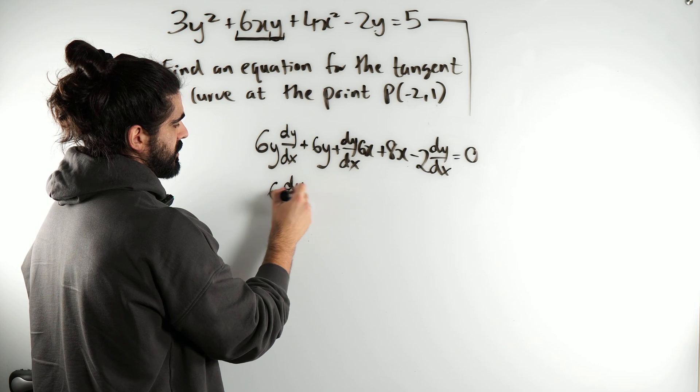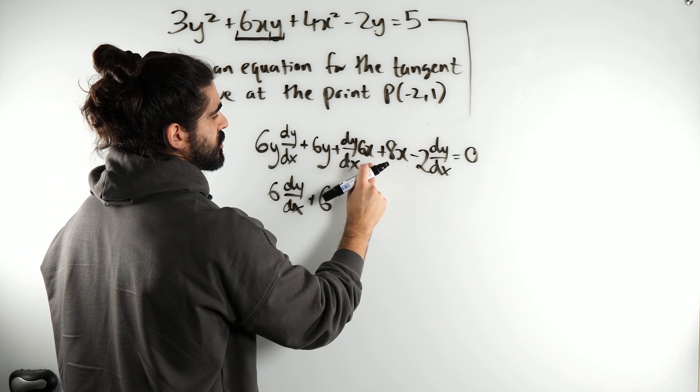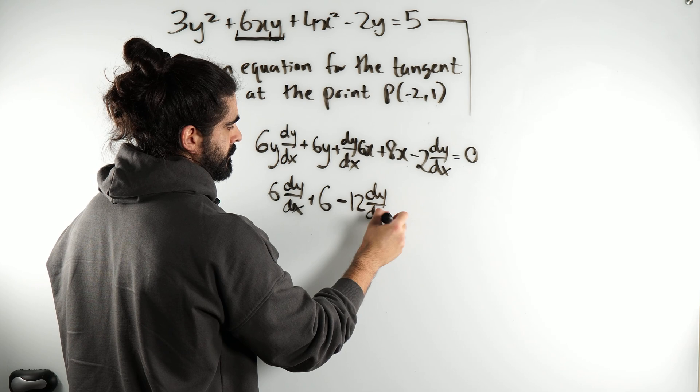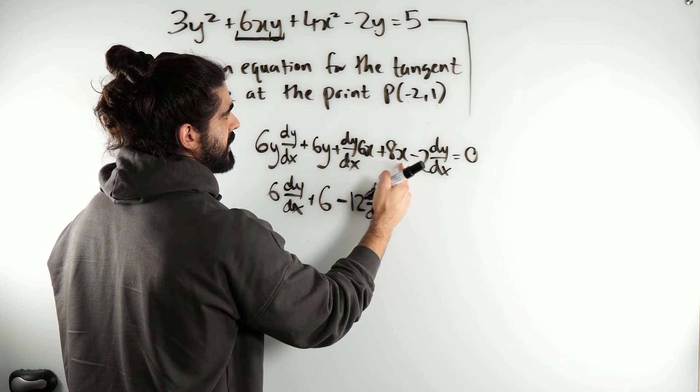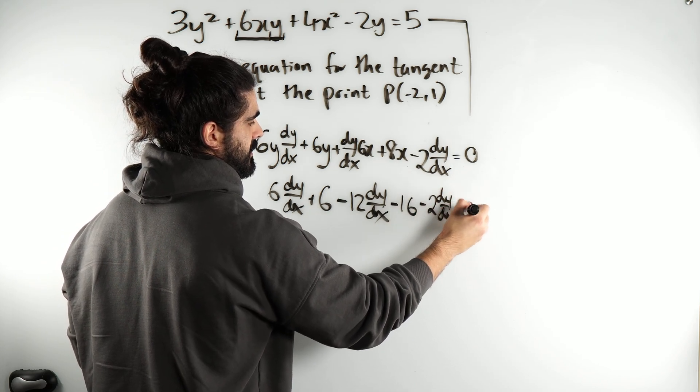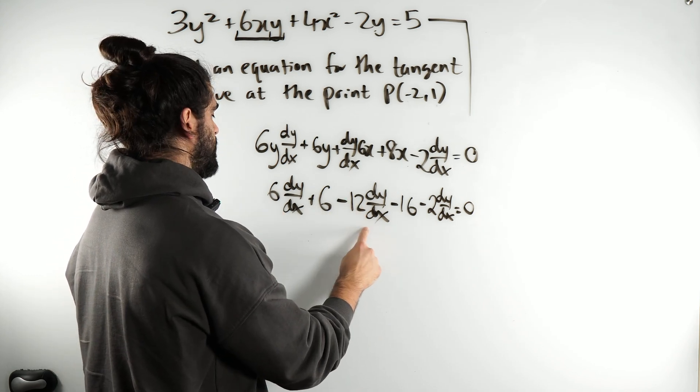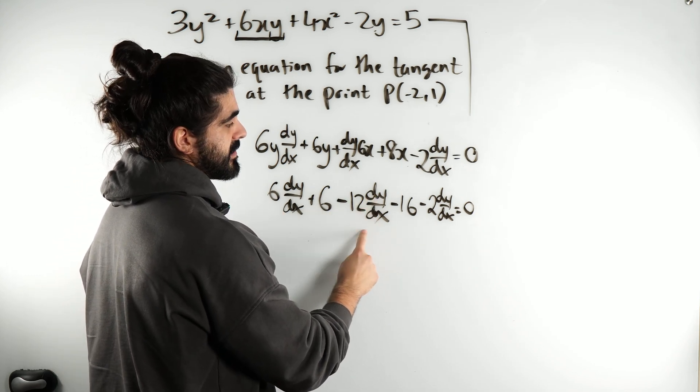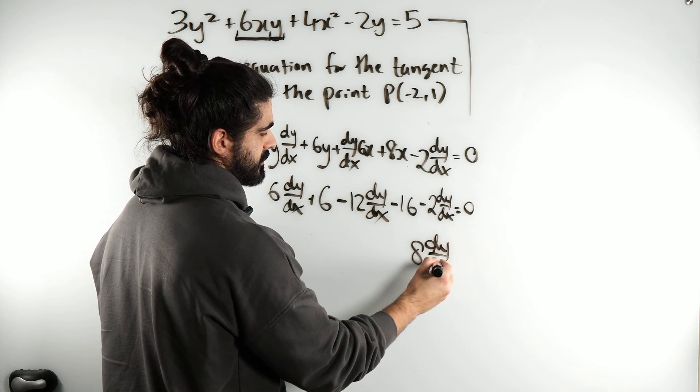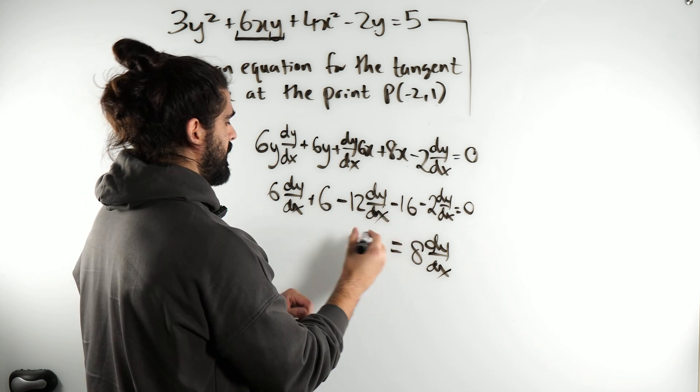So if y is 1, I get 6 dy dx, plus y is 1, 6. x is minus 2, so minus 2 times 6 is minus 12 dy dx. x is minus 2, 8 times minus 2 is minus 16. Then we have minus 2 dy dx is 0. Okay, I don't have a calculator on me, but 6 minus 12 is minus 6, minus 6 minus 2 is minus 8. I'm going to move that to the other side, 8 dy dx minus 6 equals 6 minus 16 is minus 10.